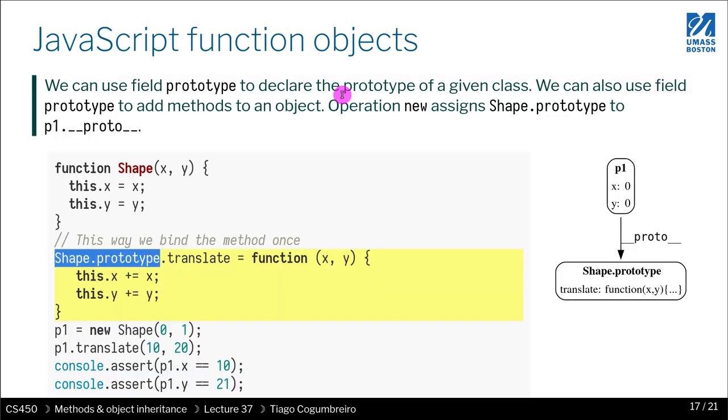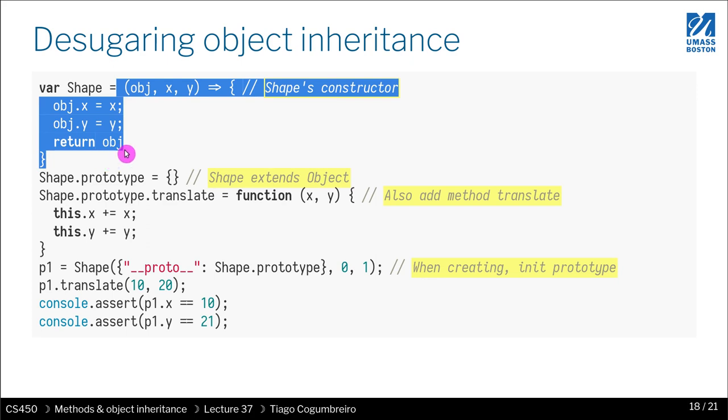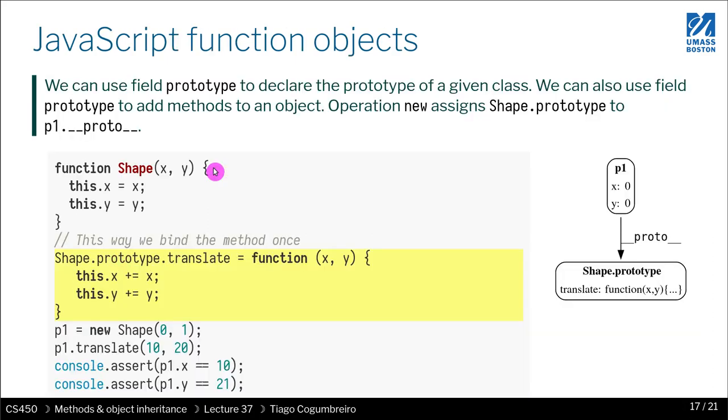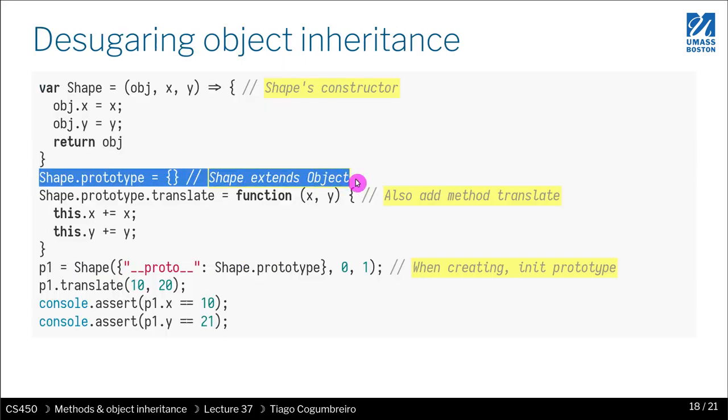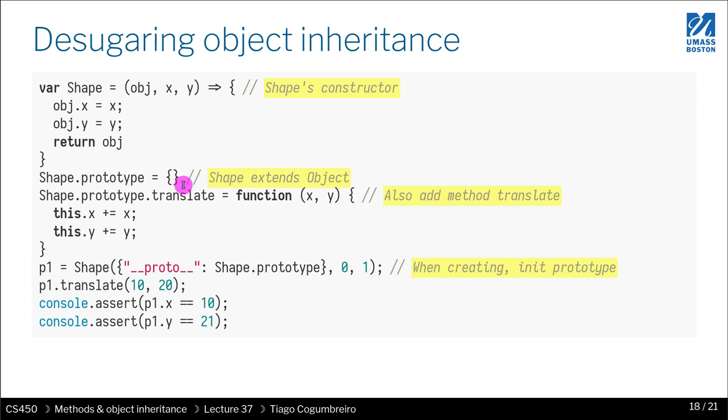So desugaring, let's desugar this example. If we have this example where we have a shape and we are setting a field directly in the prototype and then we are doing a new, let's see what that means. So that means making everything explicit. What we're doing is we're creating a function, a lambda, that takes the this now is explicit. This is the first change we did. And then at the end, we're returning the object. So that's what the constructor is doing. And then what am I doing? I'm initializing prototype to be empty because every function has this prototype initialized as empty. So this is something that is implicitly defined whenever you define a function. So all functions have a prototype field defined and it starts out empty.